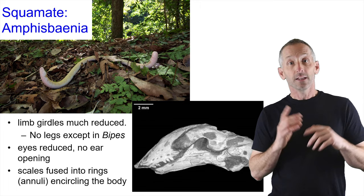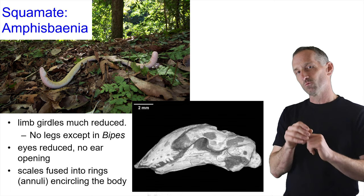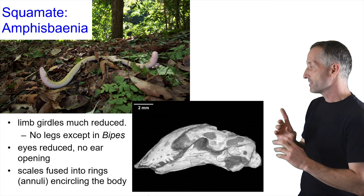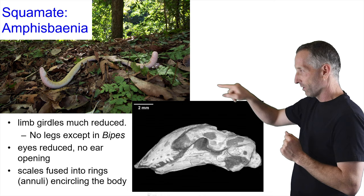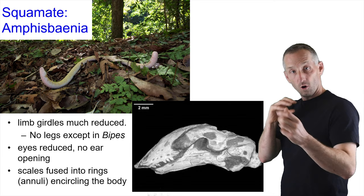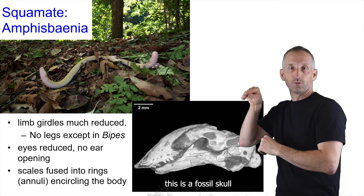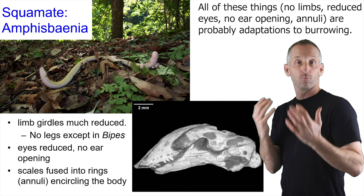In the introductory video I got excited about amphisbaenians, which I'd never seen before until we spotted them in Trinidad. They're one of those groups that has lost limbs and looks crudely like snakes. They don't have legs except in one group called bipes, which retains a little. Their eyes are very reduced, they have no ear openings, their scales fuse to form rings around the body, and their skull is a little wedge used for moving underground. Amphisbaenians spend most of their time underground — the wet period in Trinidad likely brought them out for reproduction.